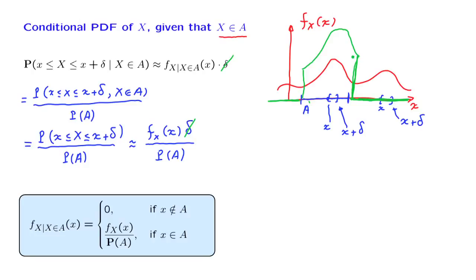We see once more the familiar theme: conditional probabilities maintain the same relative sizes as unconditional probabilities. The same is true for conditional PMFs or PDFs, which keep the same shape as the unconditional ones, except that they are rescaled so that the total probability under a conditional PDF equals 1.